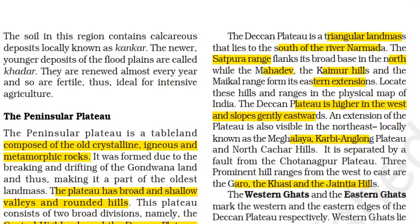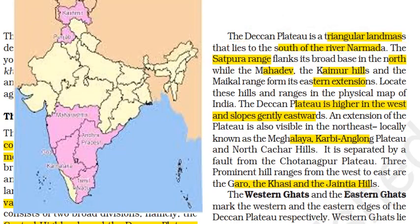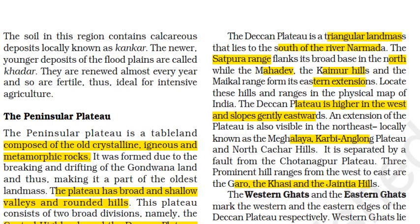The Deccan Plateau is a triangular landmass on the southern side, bounded by Satpura and other ranges. Its eastern extensions include Mahadev, Kaimur and Maikal ranges. The Deccan Plateau is higher on the west and slopes gently towards the east, which is why all rivers drain eastward. There is also an extension called the Meghalaya and Karbi-Anglong Plateau, separated from Chotanagpur by a fault. Important hill ranges include Garo Hills, Khasi and Jaintia Hills. The Deccan Plateau is bounded by the Western Ghats on the west and Eastern Ghats on the east.